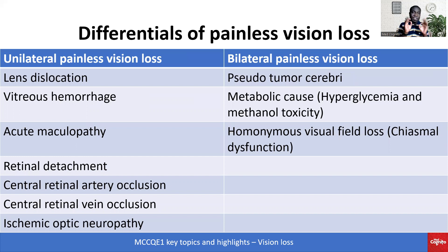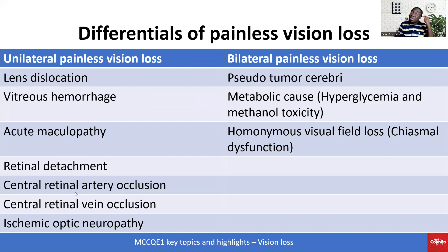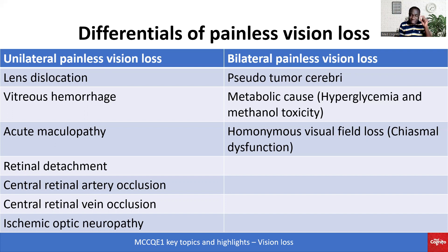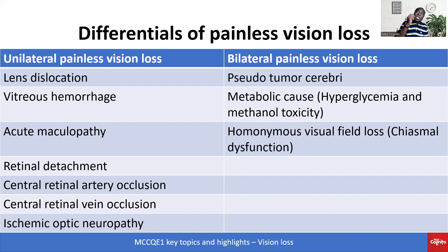Now, painless vision loss. For unilateral painless vision loss, differentials include lens dislocation, vitreous hemorrhage, and acute maculopathy. Think about what is happening to the retina: retinal detachment, central retinal artery occlusion, central retinal vein occlusion, and ischemic optic neuropathy. Even if you forget all the differentials, when thinking about unilateral painless vision loss, think about the retina — that can help.